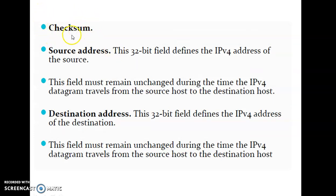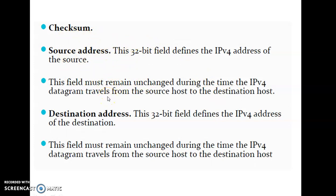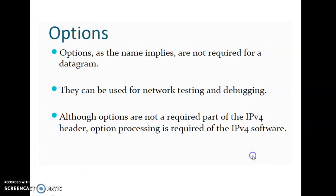The Checksum field is necessary for error detection. The Source Address is a 32-bit field defining the IPv4 address of the source; this field must remain unchanged as the IPv4 datagram travels from source to destination. The Destination Address is also a 32-bit field defining the IPv4 address of the destination, and it too must remain unchanged during the packet's travel from host to destination.